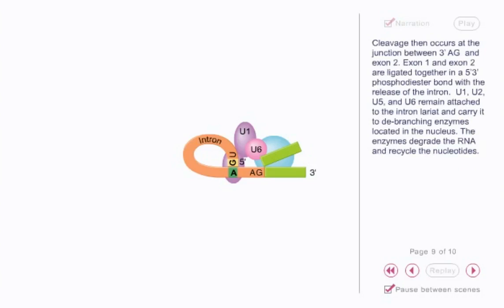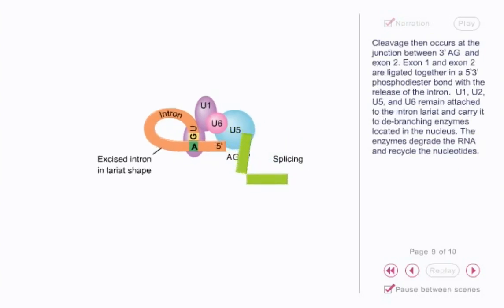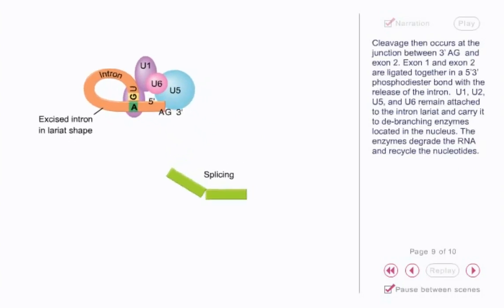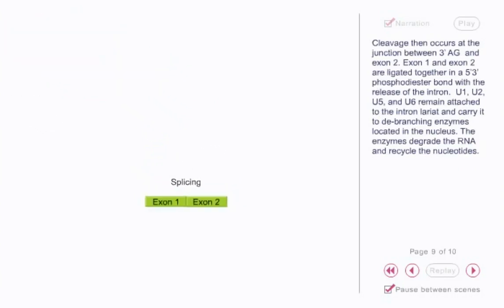Cleavage then occurs at the junction between 3' AG and exon 2. Exon 1 and exon 2 are ligated together in a 5' to 3' phosphodiester bond with the release of the intron. U1, U2, U5, and U6 remain attached to the intron lariat and carry it to debranching enzymes located in the nucleus. The enzymes degrade the RNA and recycle the nucleotides.